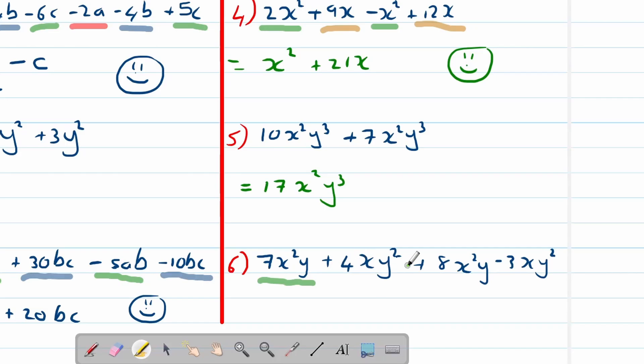Let's look at the final one, number six: 7x²y plus 4xy². Now be careful here because they look similar but they are not the same terms, they're not like terms. You can see here 8x²y is like terms with 7x²y, and then 4xy² and 3xy² those are like terms. So over here, 7x²y plus 8x²y is equal to 15x²y. And 4xy² minus 3xy² is just 1xy². Remember, we don't show the one.